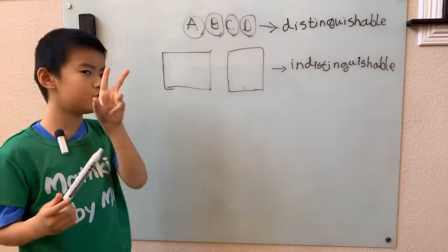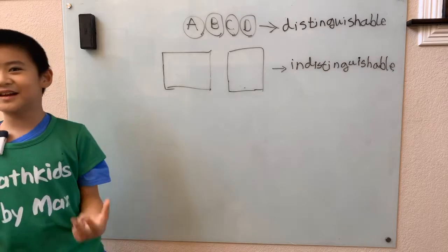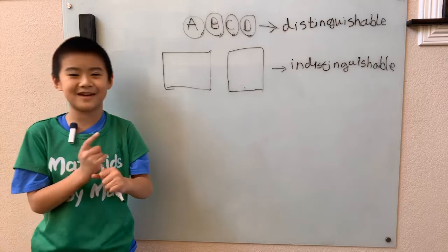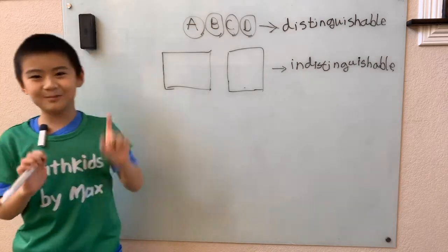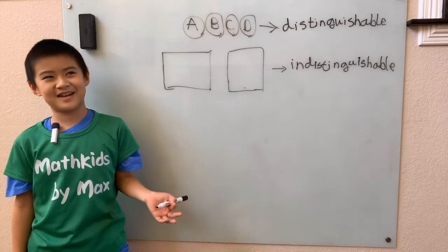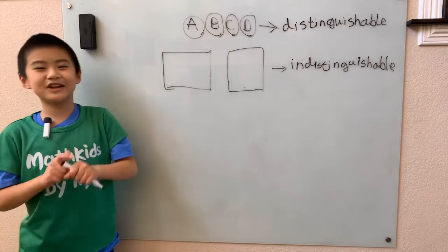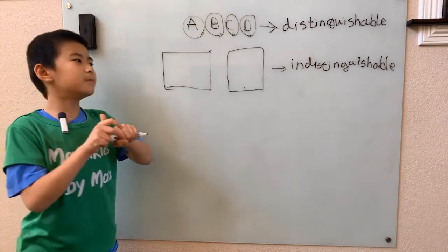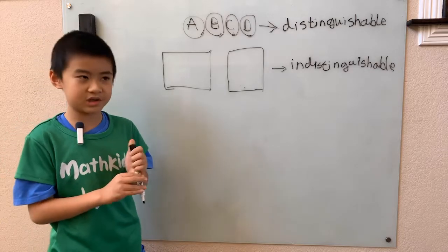There are actually two ways to solve this problem. One is the 'stupid' way — well, slower — and the other is faster. We're gonna do the stupid way first, but don't be afraid to do it. I do stupid things all the time. So the stupid way to solve this problem is by using casework.